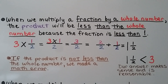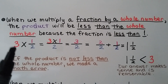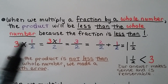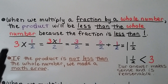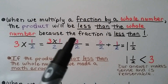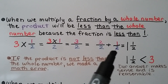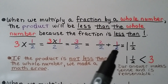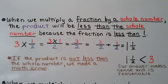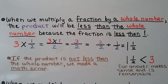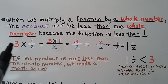When we multiply a fraction by a whole number, the product will be less than that whole number. So if we multiply 3 times 1 half, whatever the product is, it's going to be less than 3. We do 3 times the numerator 1 — that gives us a 3, written over the denominator — we have 3 halves. And 3 halves equals 2 halves plus 1 half, which gives us 1 and a half. If the product is not less than the whole number, we made a math error and need to check our math. And 1 and a half is less than 3, so our answer makes sense and is reasonable.